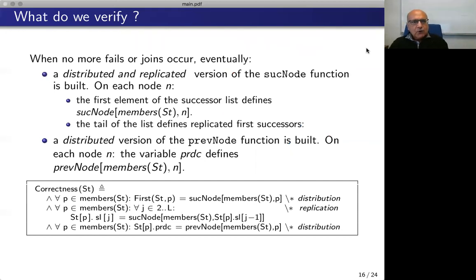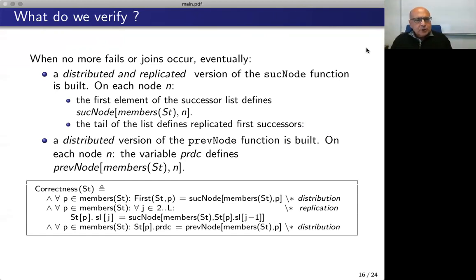So now we can state formally what we verify. We verify that when no more fails or joins occur, eventually a distributed and replicated version of the suc node function is built. That is, on each node N, the first element of the successor list defines suc node over the set of members, and the tail of the list defines replicated first successors. Also, a distributed version of the prev node function is built — on each node N, the field PRDC defines the prev node of N over the set of members.